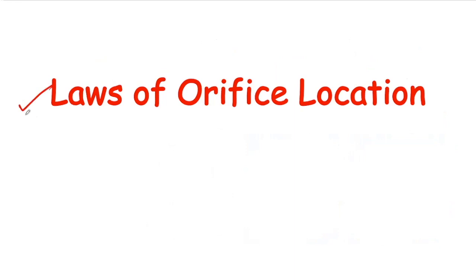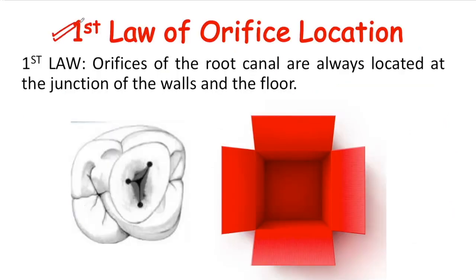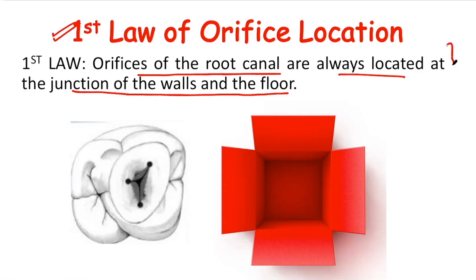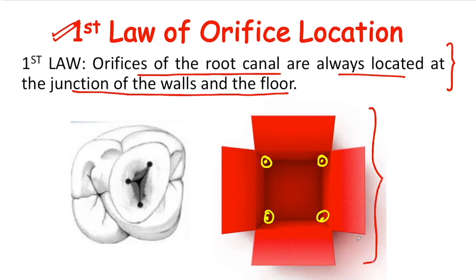The first law of orifice location says that the orifices of the root canal are located at the junction of the walls and the floor. Looking at an open box, we can see that the junction of the walls and the floor of the box represents the tentative locations of the canal orifices. Similarly, in the pulp chamber, the junctions of walls and the floor are the tentative locations of the canal orifices.